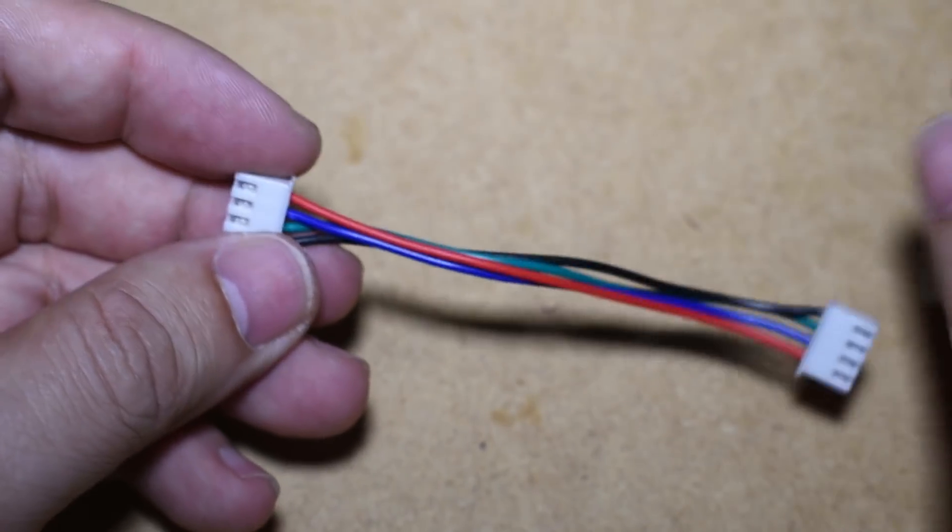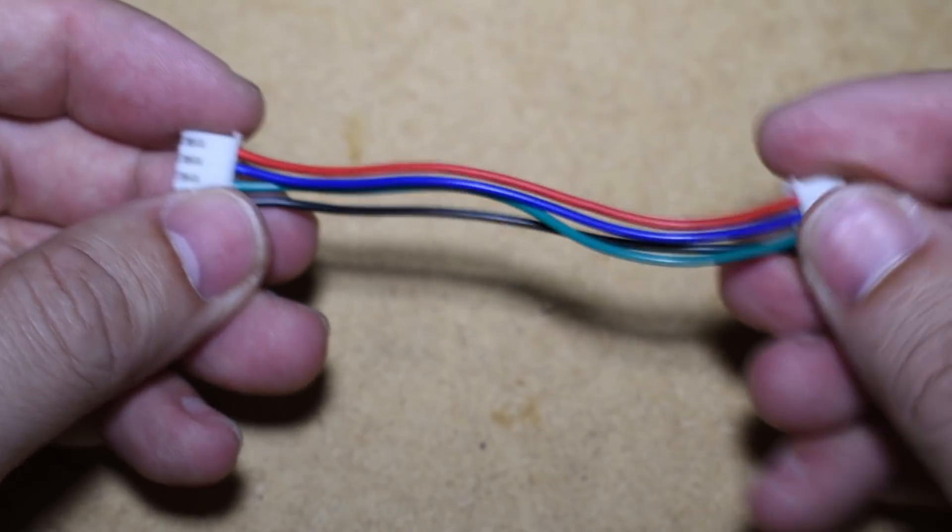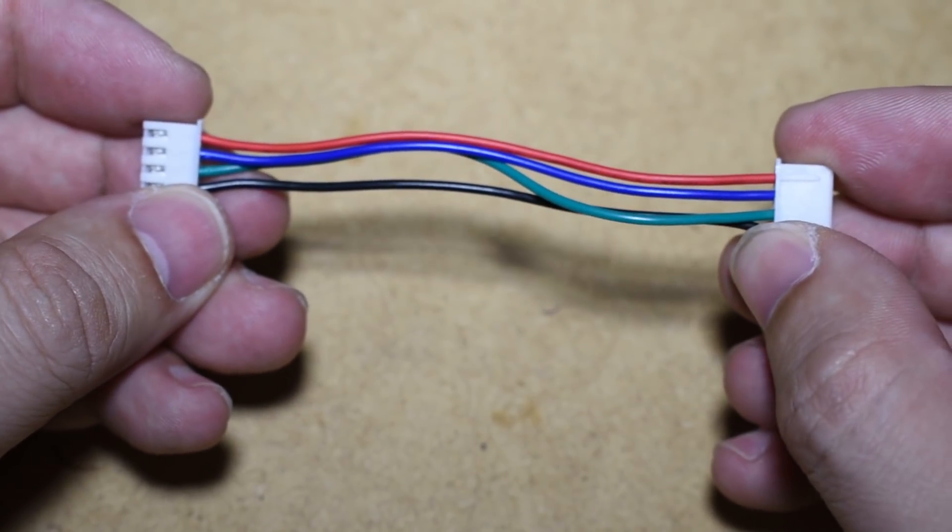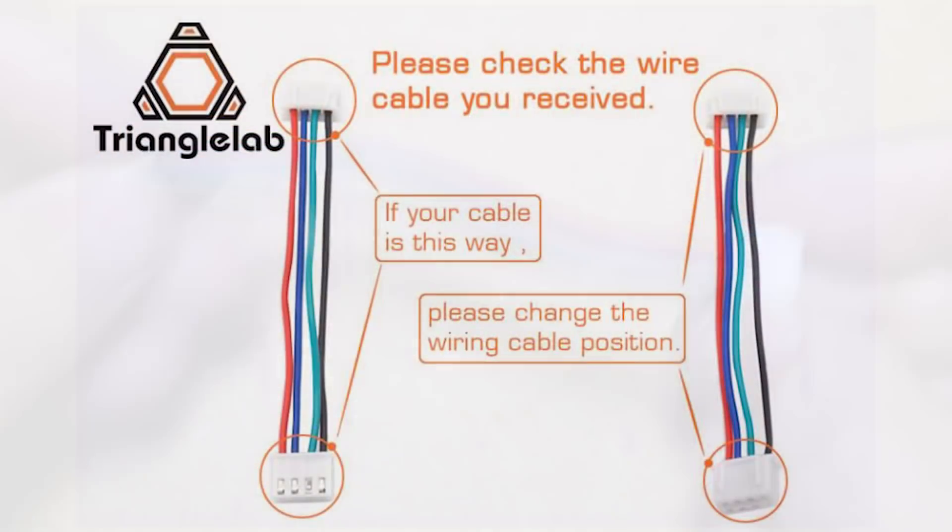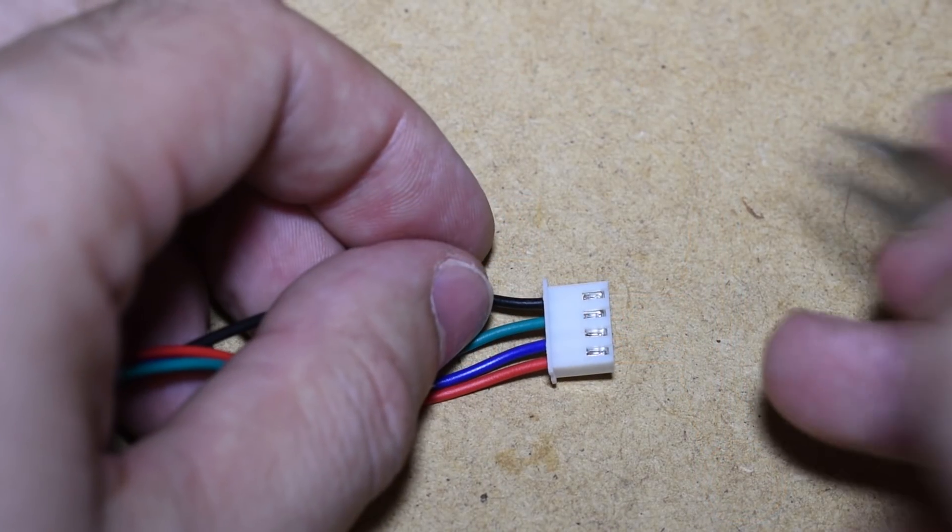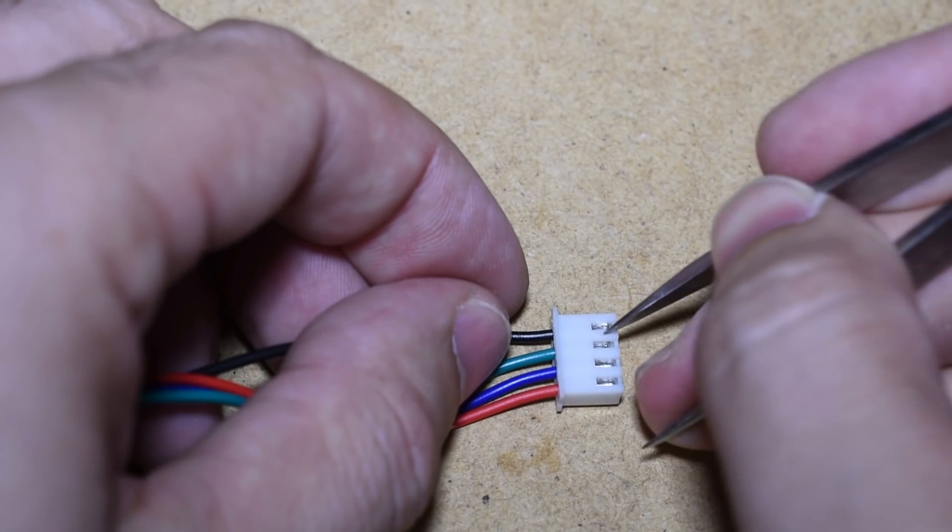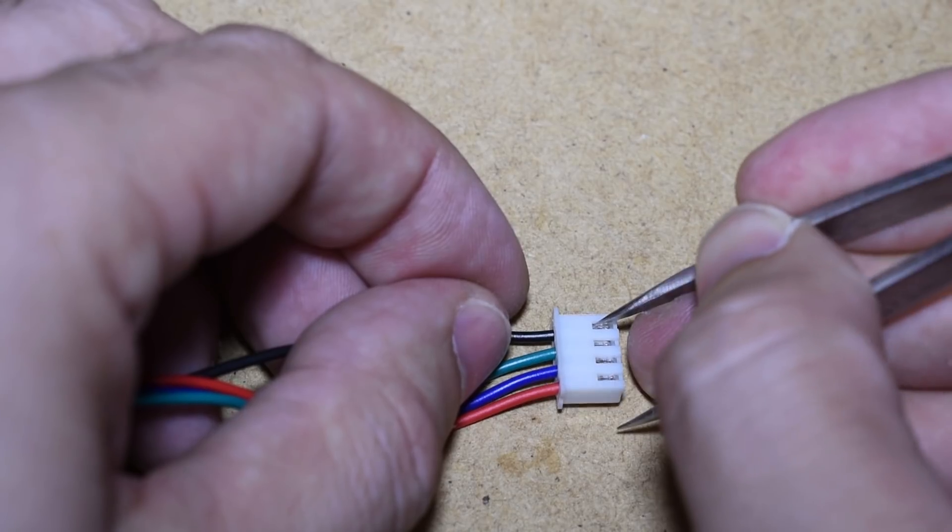But before the installation, it is very important that you check the cables that come with the smoothers. If the wires are like this, then you will have problems when you home the axis as they will move in the wrong direction. To fix that, just remove the wires and place them back in the correct order.